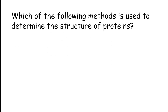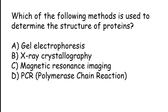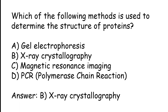Which of the following methods is used to determine the structure of proteins? Options: gel electrophoresis, X-ray crystallography, magnetic resonance imaging, PCR (polymerase chain reaction). The correct answer is option B: X-ray crystallography.